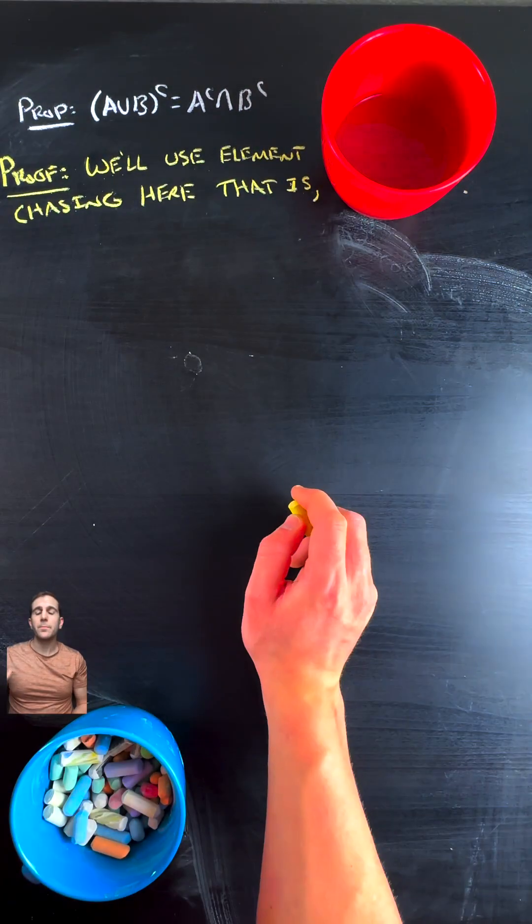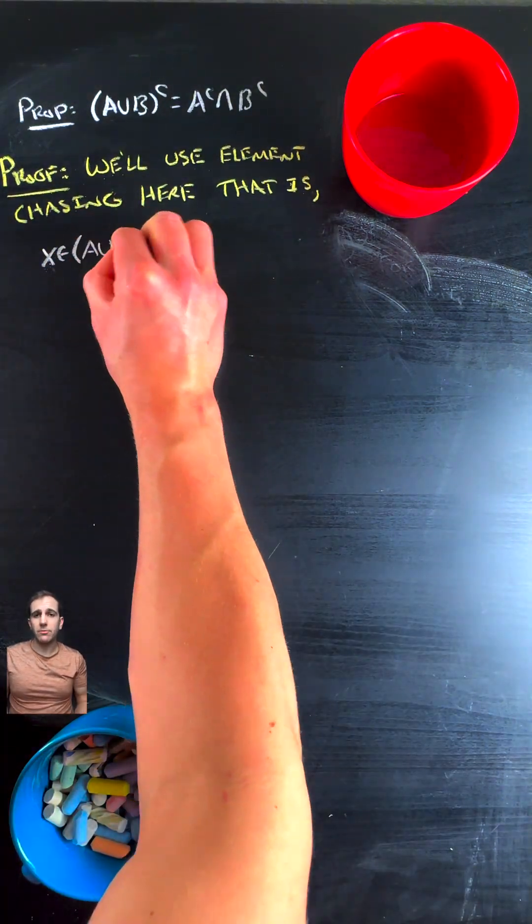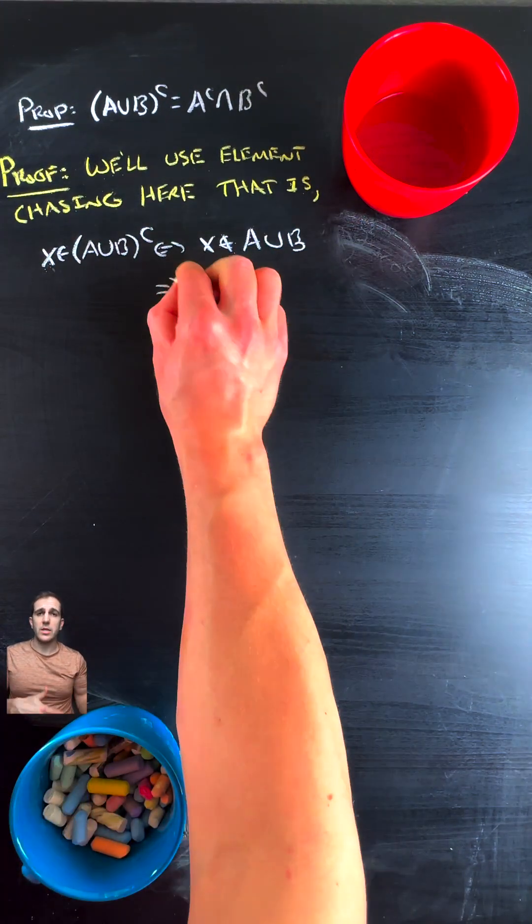So here, X is within (A∪B)ᶜ if and only if X is not within A∪B.